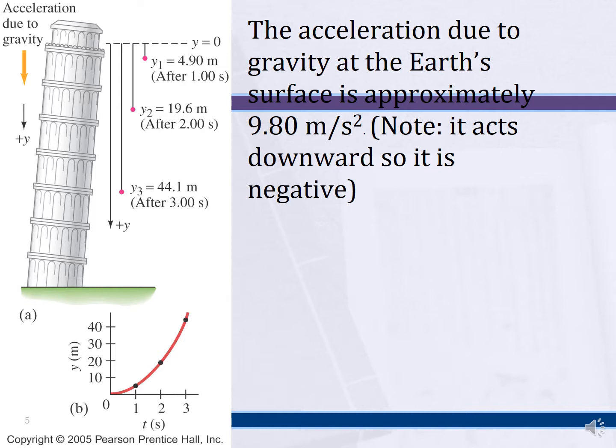That acceleration on Earth is close to 9.8 meters per second squared. I want to point out that our graphing comes right back in. When we're graphing our position versus time when we have an acceleration, it is this nice curve, showing that we have that quadratic relationship taking place.